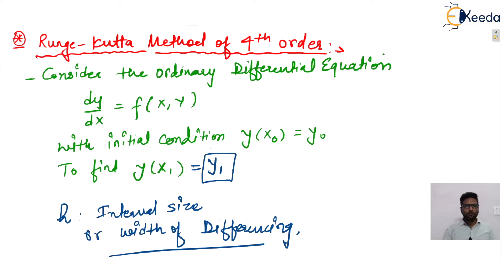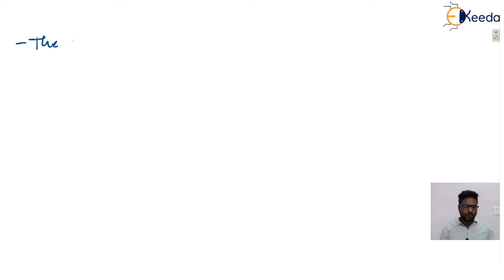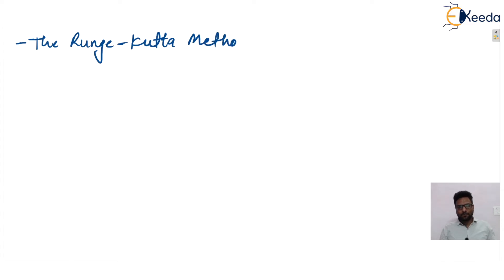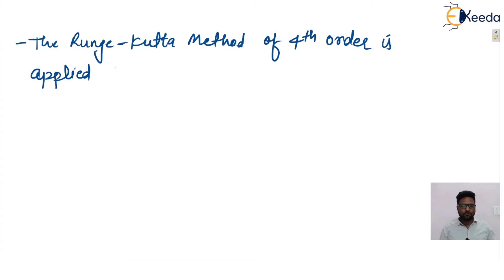Four parameters are to be found — k1, k2, k3, and k4. Finally, we find k, the final k, which will be the weighted sum of all k1, k2, k3, and k4. The Runge-Kutta method of fourth order is applied as follows: calculate successively k1, k2, k3, and k4.